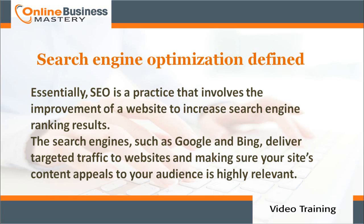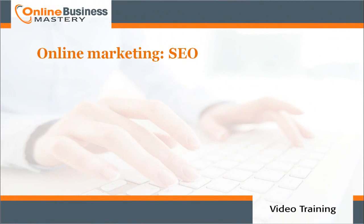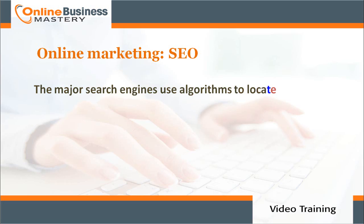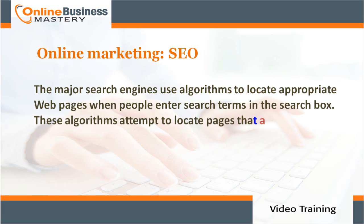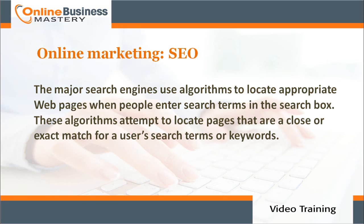For online marketing SEO, the major search engines use algorithms to locate appropriate web pages when people enter search terms in the search box. These algorithms attempt to locate pages that are close or exact matches for users' search terms or keywords.